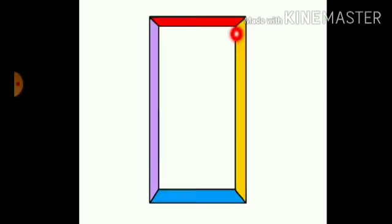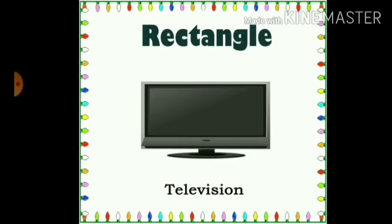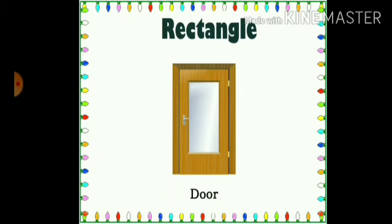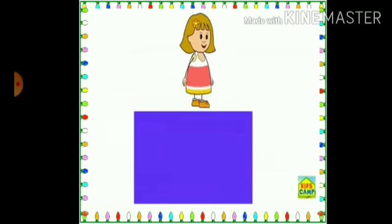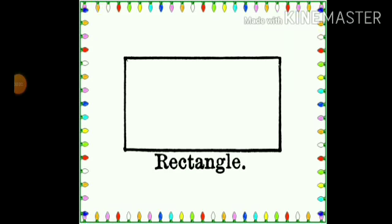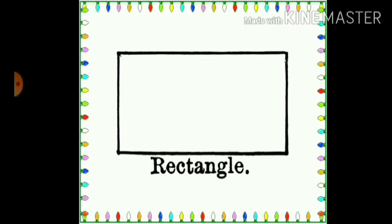Children, can you tell me what is this? This is a shape. How does it look like? Does it look like a television set? If I keep it like this, does it look like the door of your house? Okay, children, this is a shape. Now, as you all have your name, this shape also has a name. Do you want to know the name of the shape? I will tell you — the name of the shape is rectangle. This is a rectangle.